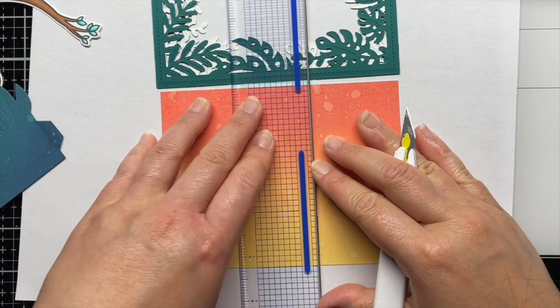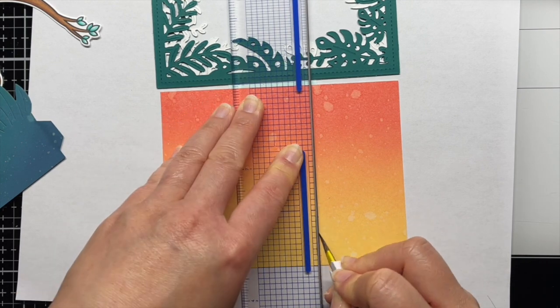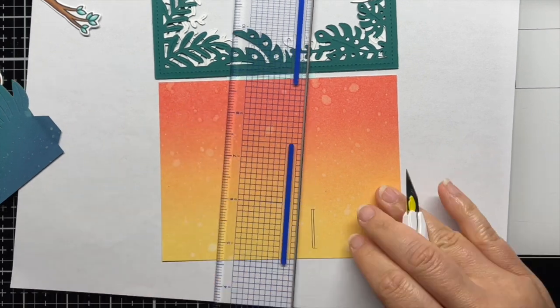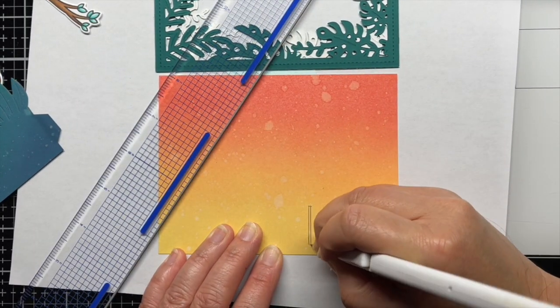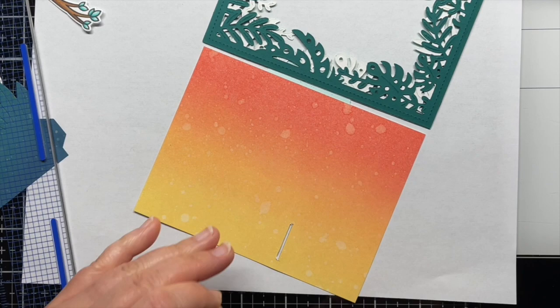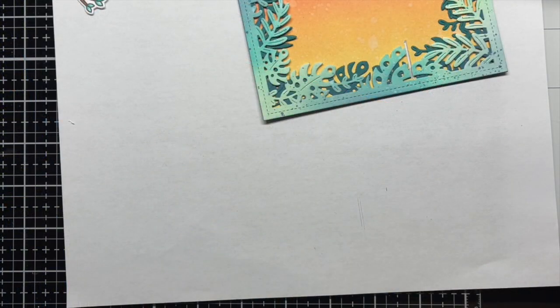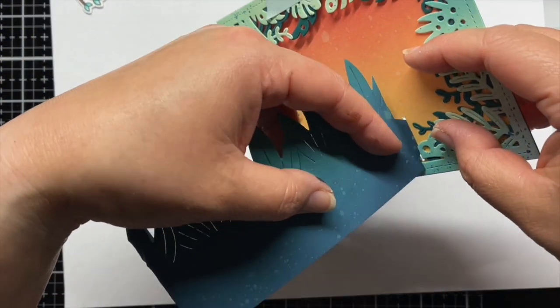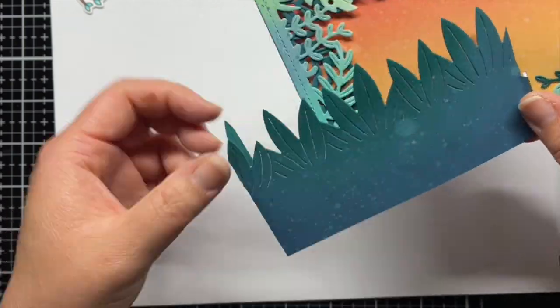Off camera I place the tropical leaves backdrop over the blended panel and cut out the area that covers the notch I just cut. Now you can see how my tab will fit into the panel without getting stuck on the tropical leaves backdrop.